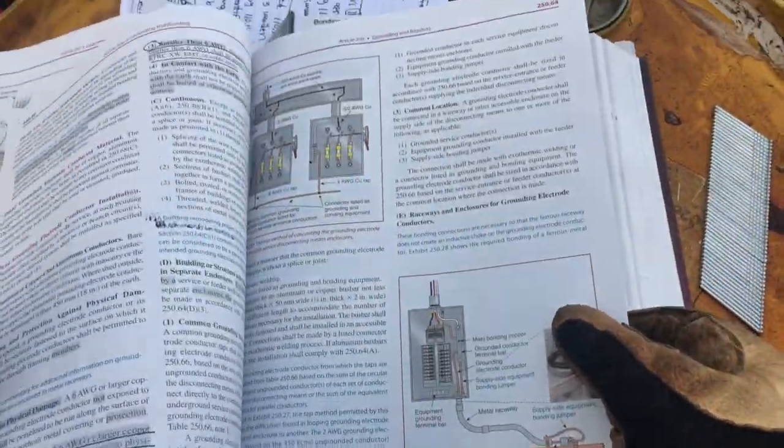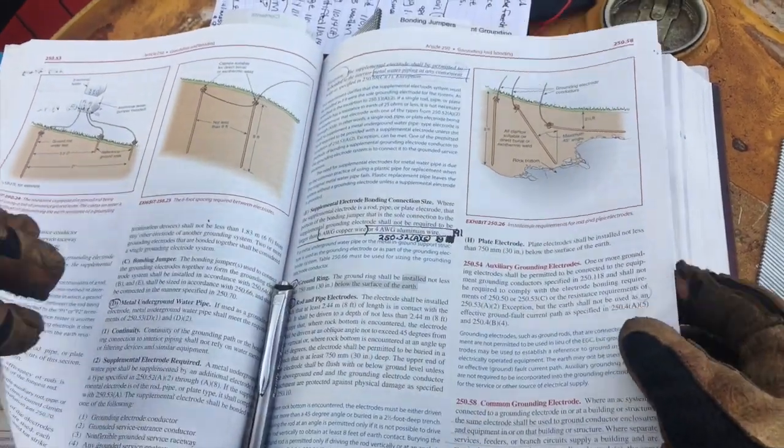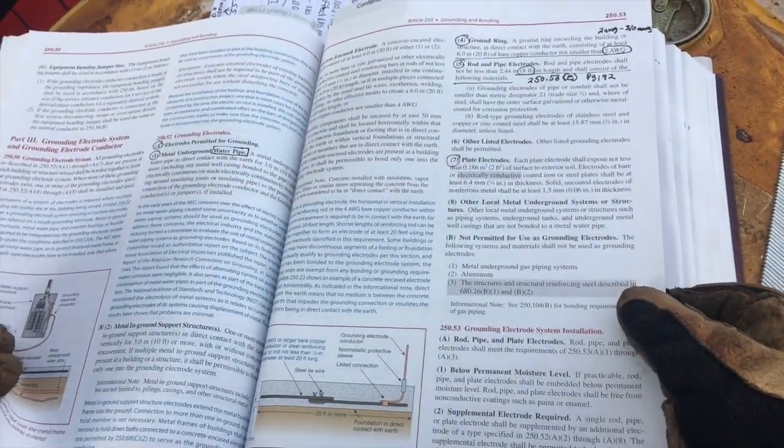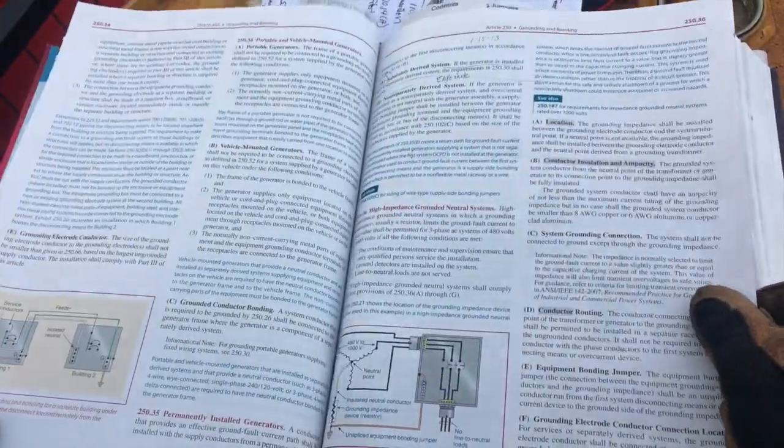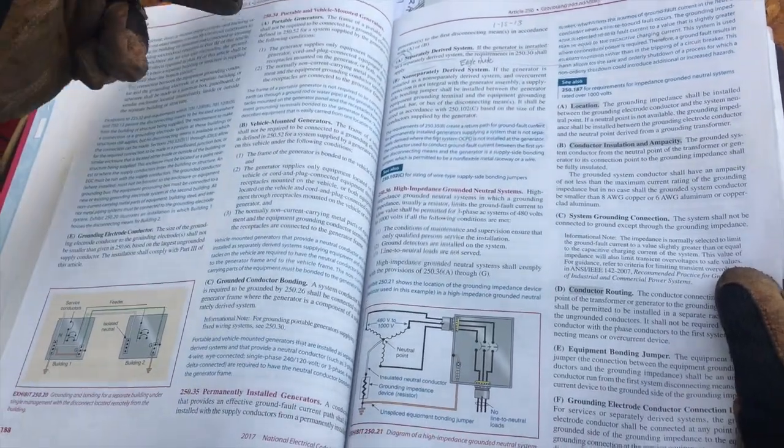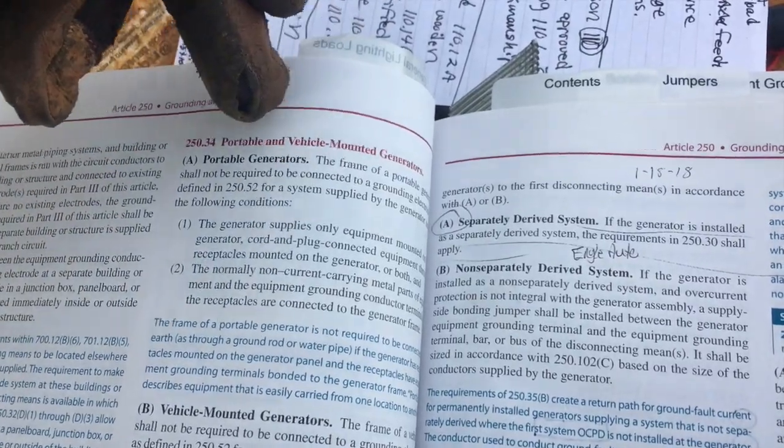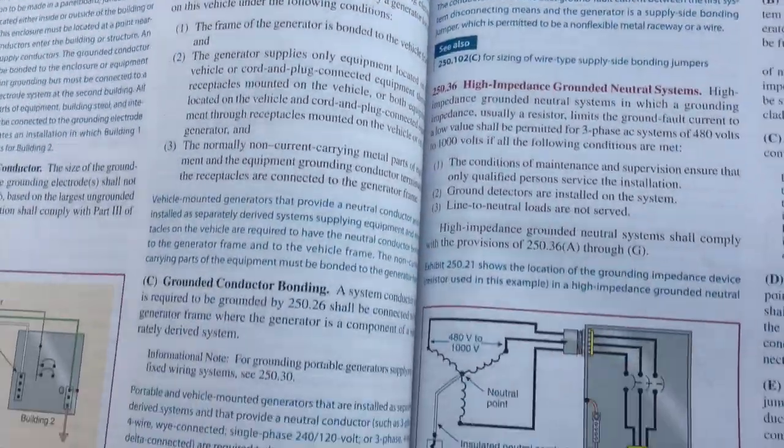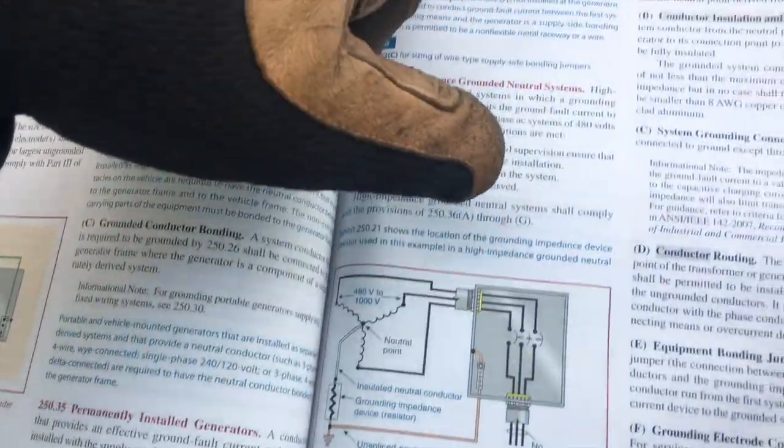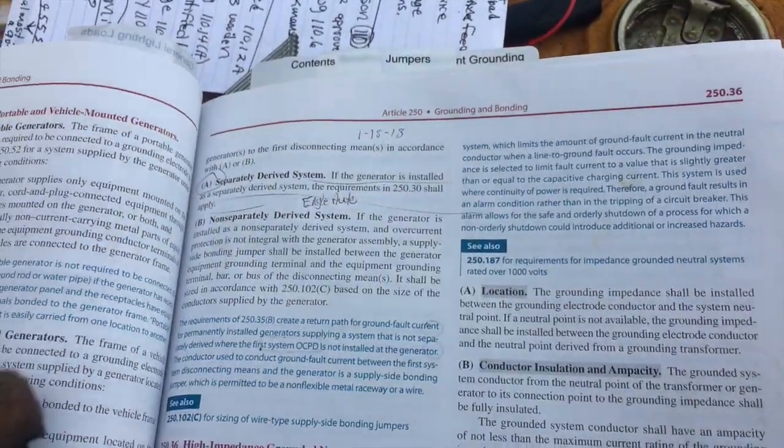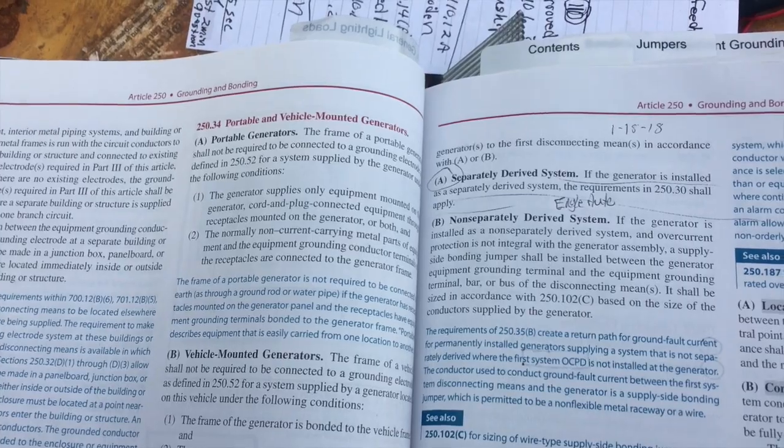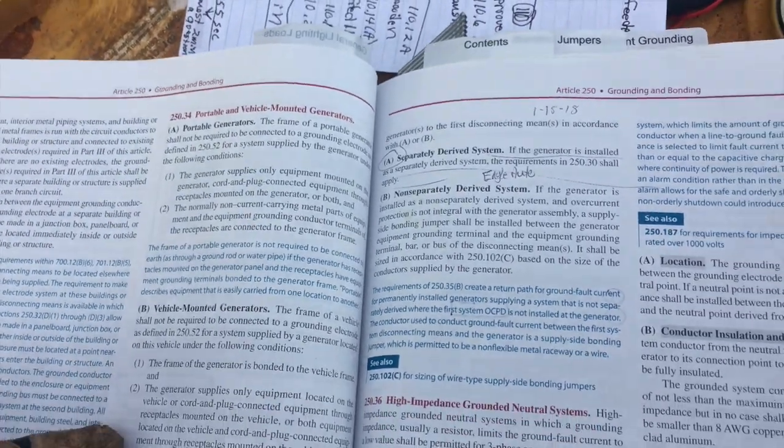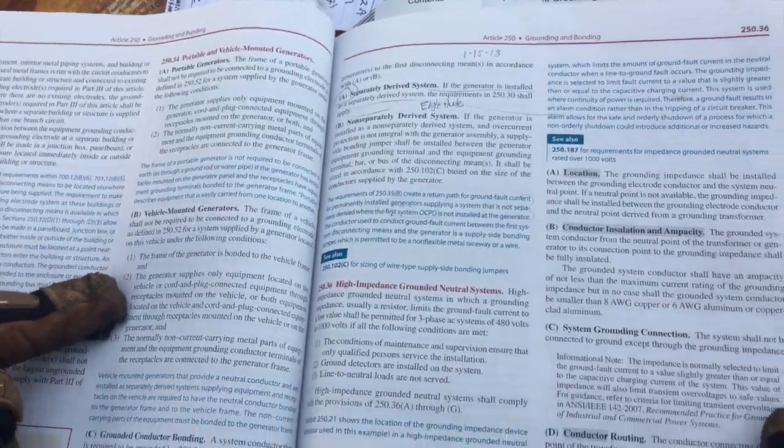The other thing I want you to pay to do is your grounding. There's a code article that I found, 250.34, for vehicle and portable and vehicle mounted generators, and permanently installed generators there's as well, which would refer you over here to A and then to 250.30. But this is going to refer you to 250.52 for portable generator. Read through that article. And this will talk about your bonding of that vehicle in the frame of that unit like I showed you earlier.